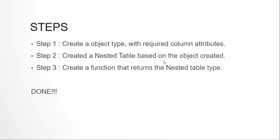The three things that we are going to do: first of all, we are going to create an object type. The benefit of using an object type is that we can have comma-separated attributes for an object. An object can be considered like a package in which we have variables, functions and procedures — though object is definitely not a package, it is a totally different concept, but just to understand, we can think of it as a package.